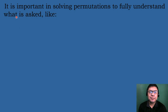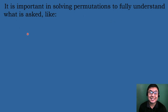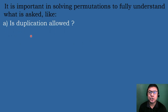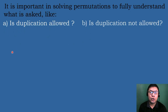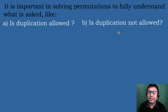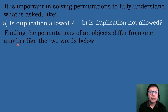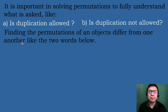It is important in solving permutations to fully understand what is asked — for example, is duplication of the objects allowed, or is duplication of the objects not allowed? Finding the permutations of objects differs depending on whether objects are identical or distinct.